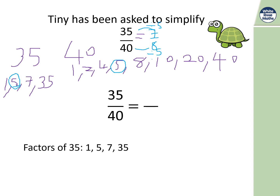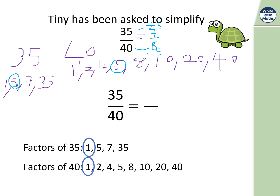To confirm: factors of 35 are one, five, seven, and 35; factors of 40 are one, two, four, five, eight, ten, twenty, and forty. One is co-prime — dividing by one doesn't change the answer. Five is the highest common factor. It goes into 35 seven times and into 40 eight times. So the correct simplified answer is seven eighths. Whatever you divide the top by, you must divide the bottom by the same number.